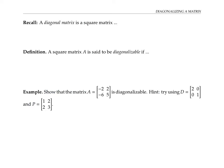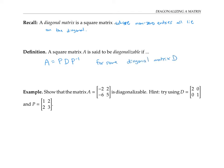A diagonal matrix is a square matrix whose non-zero entries all lie on the diagonal. A square matrix A is said to be diagonalizable if A can be written in the form P times D times P inverse, for some diagonal matrix D and some invertible matrix P. If A is an n by n matrix, then D and P need to also be n by n matrices to make the dimensions work out.